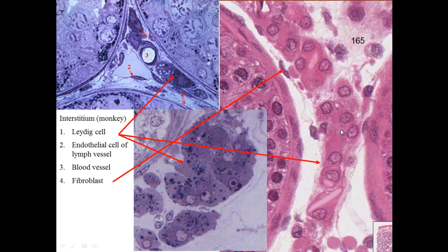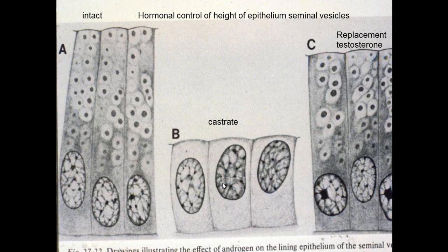Remember from part 1, testosterone is produced by the Leydig cells. Here we see Leydig cells between the seminiferous tubules - different profiles of Leydig cells that produce testosterone. Testosterone is important in maintaining secondary sex characteristics and epithelial height. Here we see the seminal vesicles with a typical height of epithelium with secretions above the nucleus. If you castrate the individual they will go to a basal layer without secretions, and with replacement therapy the secretions and epithelial height will return, though not quite to the intact level.